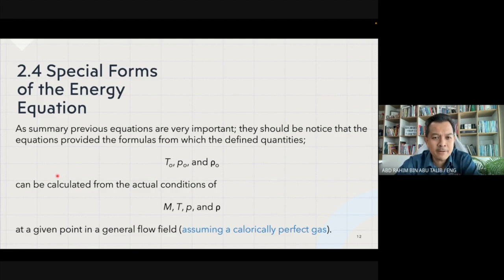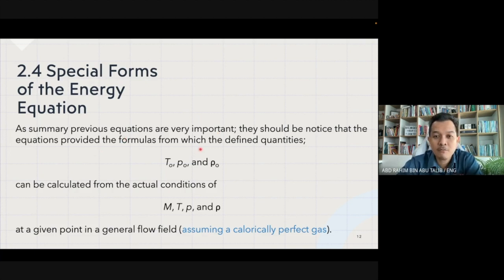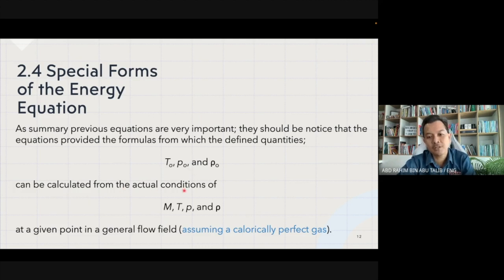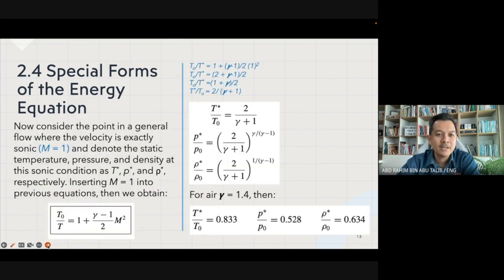In summary, we have looked at the special forms of the energy equation. These equations provide formulas from which T₀, p₀, and ρ₀ can be calculated from the actual Mach number, temperature, pressure, and density at any given point in a general flow field, assuming a calorically perfect gas.